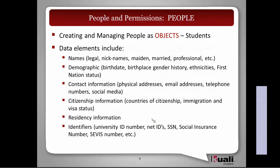Citizenship information including countries of citizenship — because some allow multiple countries. Immigration information and visa status. Institutions need to deal with residency information for tuition calculation purposes, so that will be maintained. And any variety of identifiers, whether it's a university-specific ID number, a net ID, a social security number in the United States, a social insurance number in Canada, the SEVIS number for international students in the United States, or any other form of identifier.